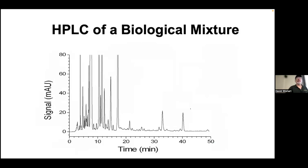A typical HPLC separation run might last 50 minutes — unusually long — showing dozens of peaks. Compounds coming out later on a C18 column are more hydrophobic; those coming out early are more hydrophilic. The intensity of the peak is related to how much material is there. In this case we're measuring absorbance at around 280 nm UV. Not every peak represents a pure compound — many peaks may have 3, 4, or 10 compounds underneath them.